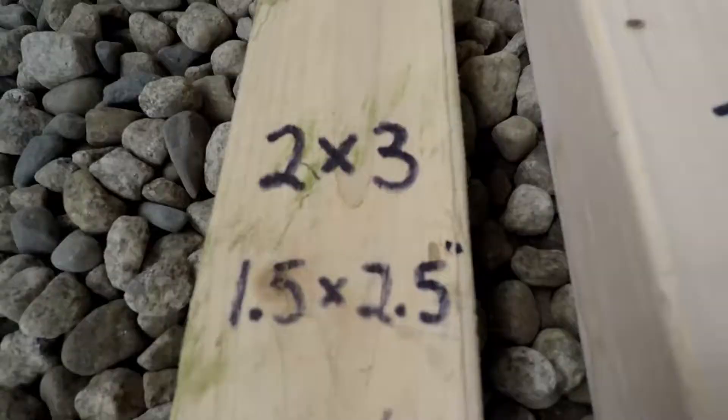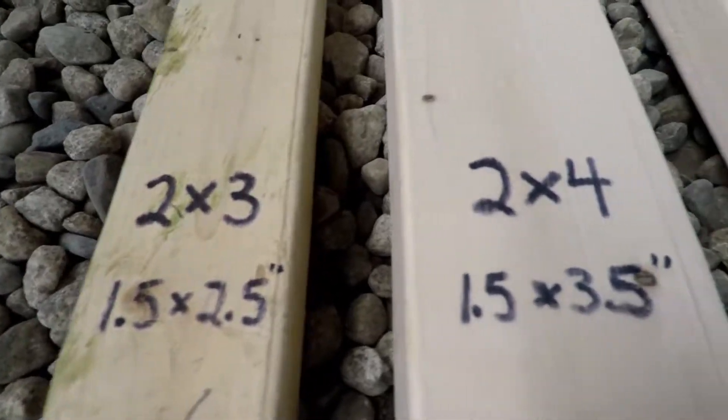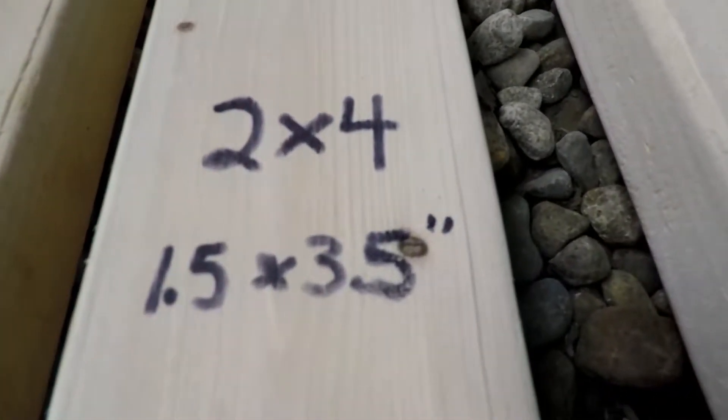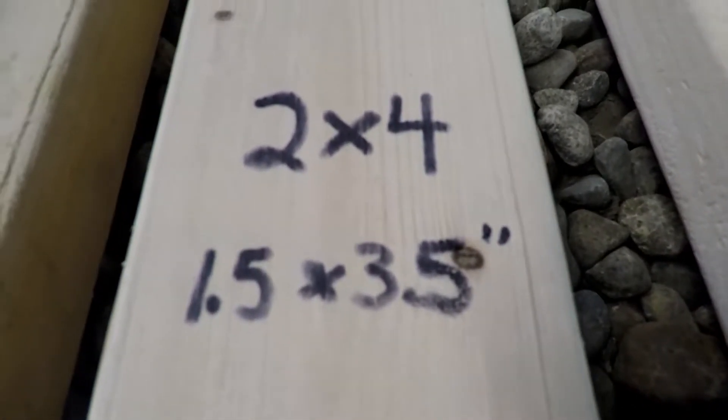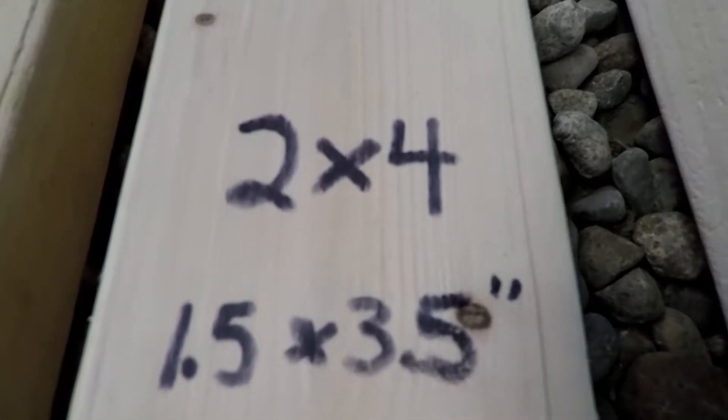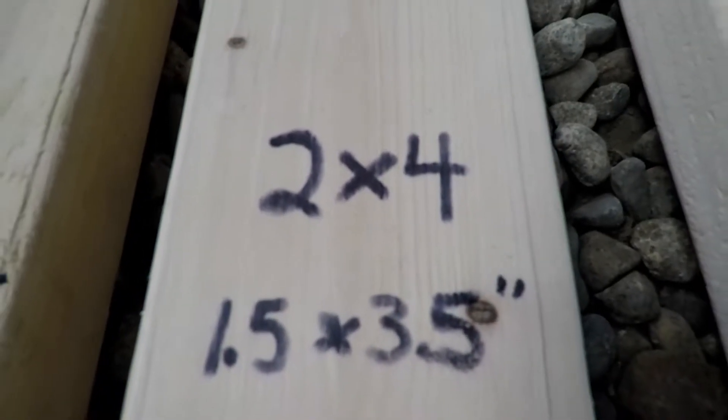A two by four was actually two inches by four inches. It's a wood product — it shrinks. Now a two by four is 1.5 by 3.5 inches.